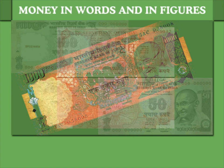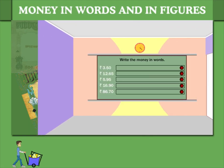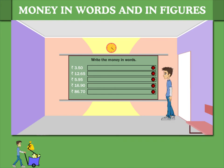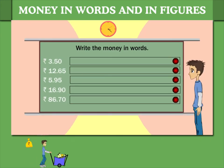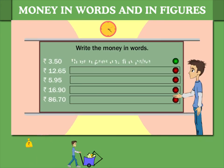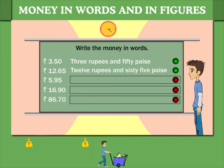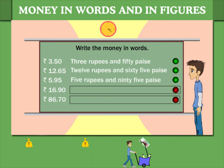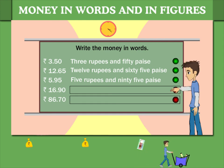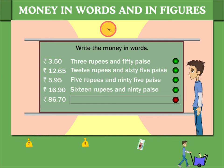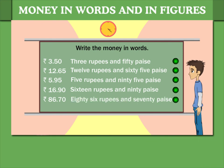Money in Words and Figures. Sammy has some money written in figures and he shows how to write them in words: 3 rupees and 50 paise, 12 rupees and 65 paise, 5 rupees and 95 paise, 16 rupees and 90 paise, 86 rupees and 70 paise.